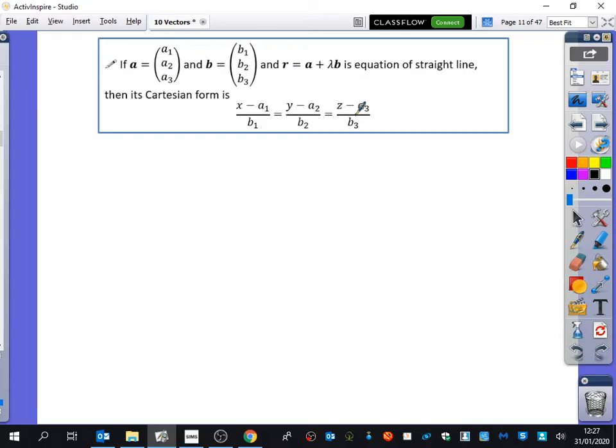So we've been told if a1, a2, a3 is the vector a, which is the position on the line, and if the direction of the line is b1, b2, b3, and the equation of the line is r equals a plus lambda b, we get r equals a plus lambda b. We're going to try and derive this Cartesian form of the equation that we've got here.